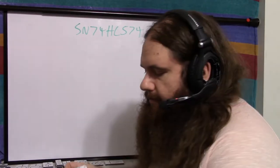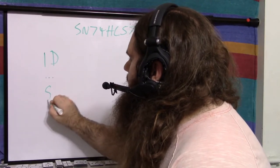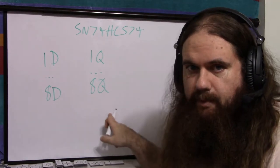So besides VCC and ground, you've got 8 in-bits and 8 out-bits. 1D through 8D, and 1Q through 8Q. So D is input, Q is output.